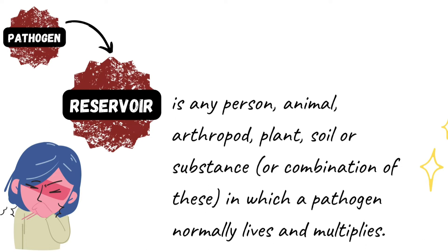The second link is the reservoir — any person, animal, arthropod, plant, soil, or substance, or combination of these, in which a pathogen normally lives and multiplies. The infectious agent depends on the reservoir for survival and can reproduce itself in such a manner that it can be transmitted to a susceptible host. Reservoirs can be animate — such as people, insects, birds, and other animals — or inanimate, such as soil, water, food, feces, intravenous fluid, and equipment.